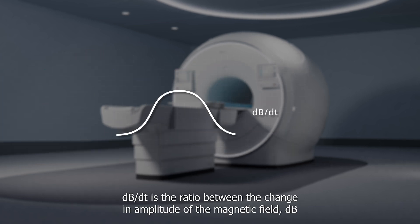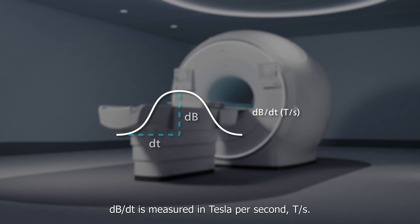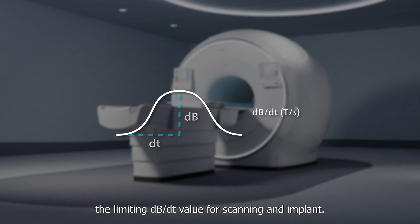dB/dt is the ratio between the change in amplitude of the magnetic field, dB, and the time it takes to make that change, dt. dB/dt is measured in Tesla per second (T/S). Implant manufacturers may specify the limiting dB/dt value for scanning an implant.